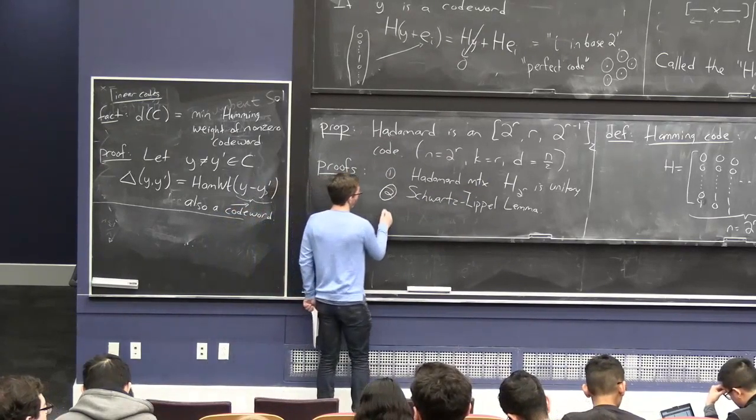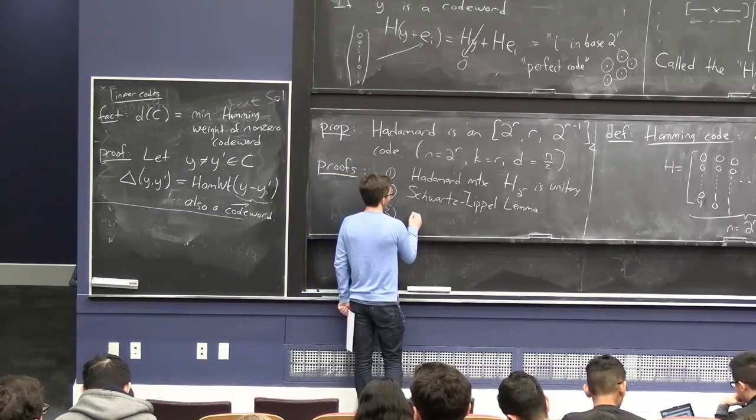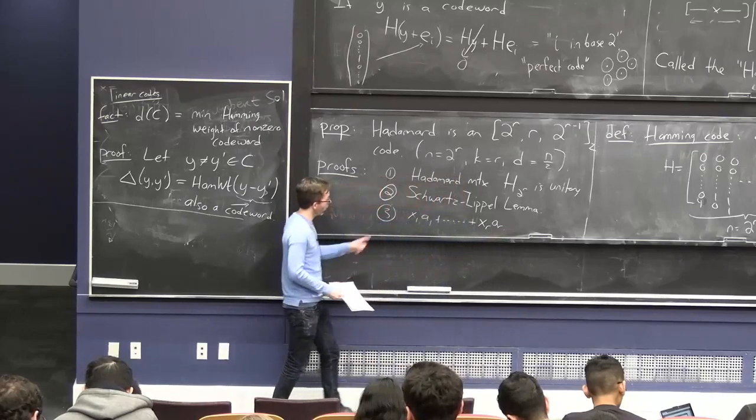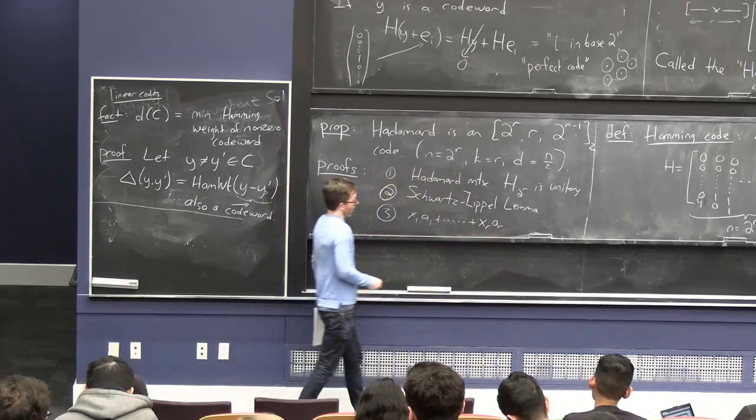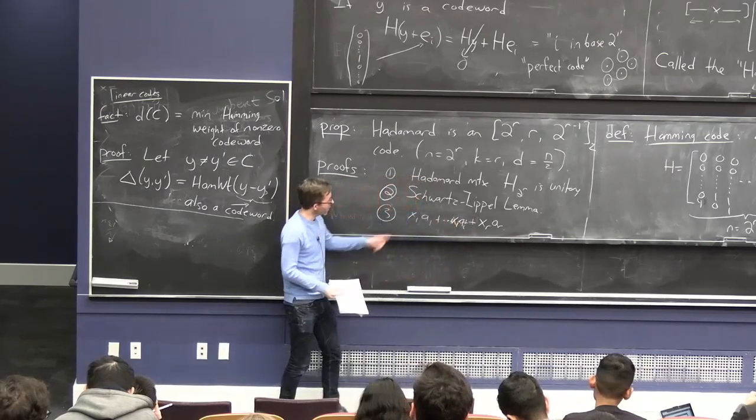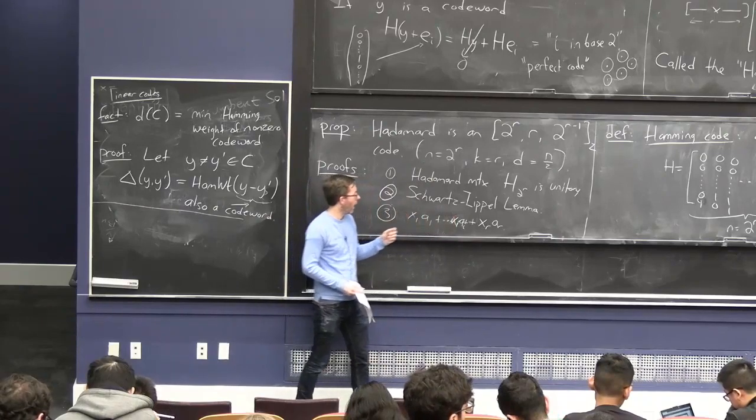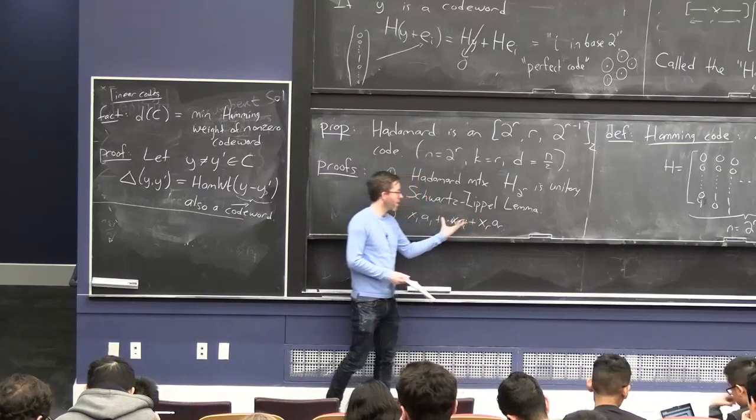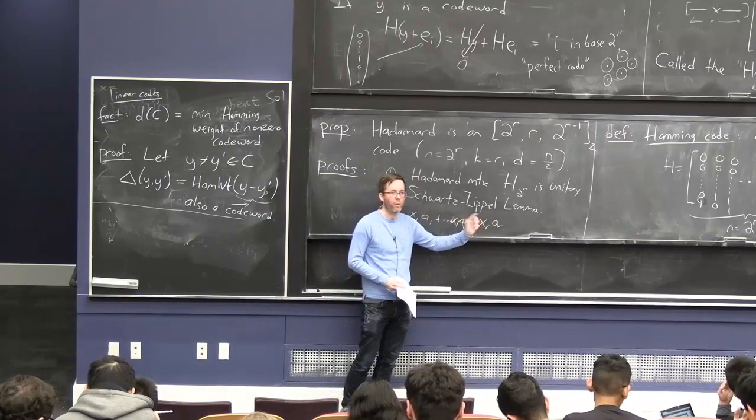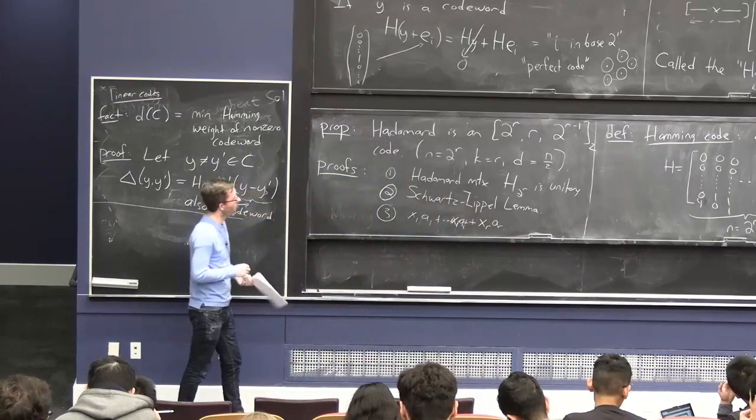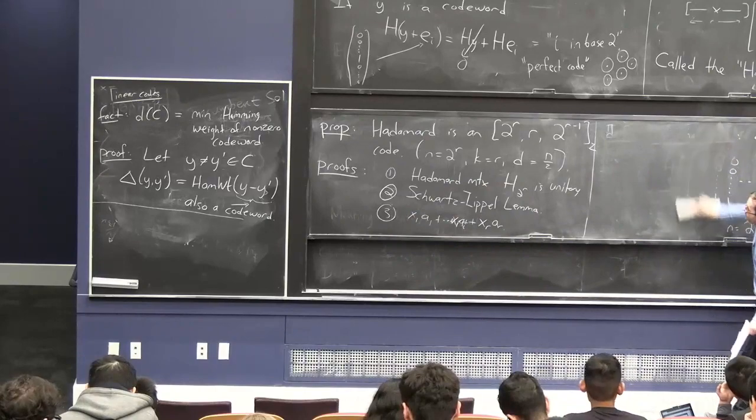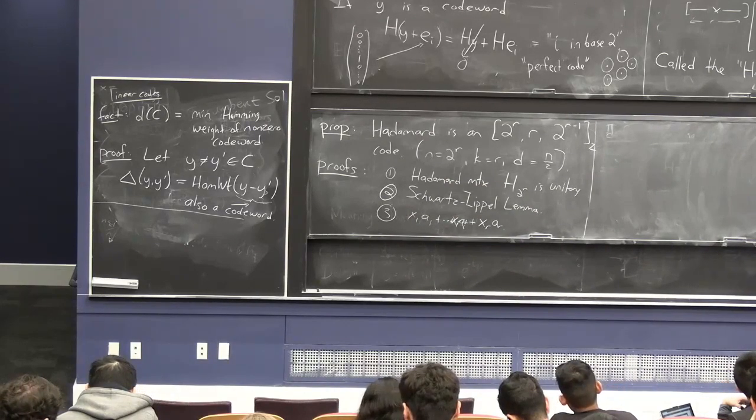And finally, you can just think about this Schwartz-Zippel proof in a simple way. I mean, if this difference polynomial looks like x1, a1, plus dot dot dot, plus x, r, a, r, and the coefficients x1 through xr are not all zero, then in particular, there's at least some xi which is not zero. And now you pick the a's at random, which is like picking a random position in the code word. Pick all the non-AIs at random. They'll give you some value. xi is 1 by virtue of not being zero. And then you have a 50-50 chance that AI changes the final answer to 1 or 0. So maybe we didn't need three proofs of the same fact, but this is the justification for why the minimum distance, and in fact, every intracode word distance is exactly n over 2.